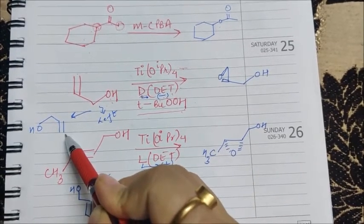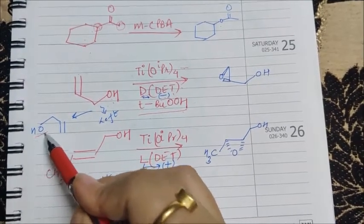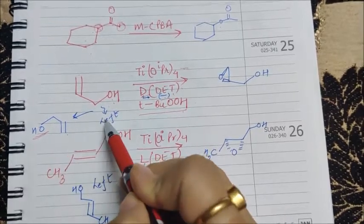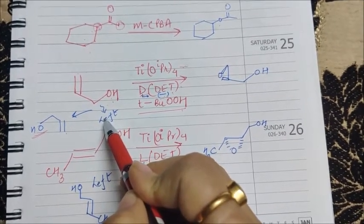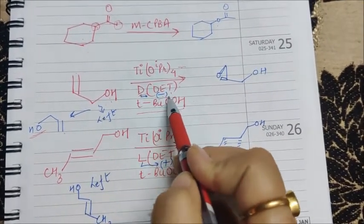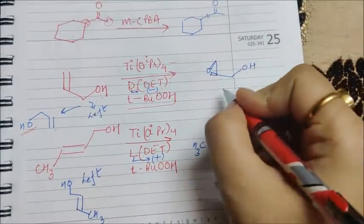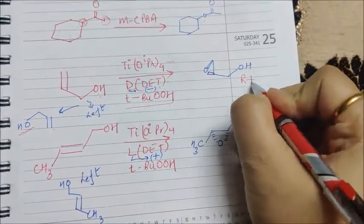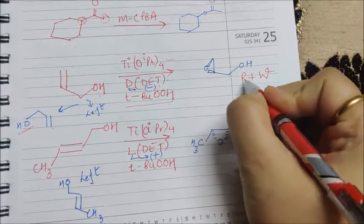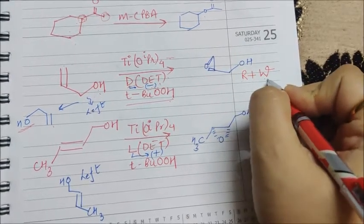So in this way I have rotated the molecule, and now as you can see, the OH is on the left. Let's remember the formula first: R plus W, red and white, red and white. I suppose you remember this, red plus white.